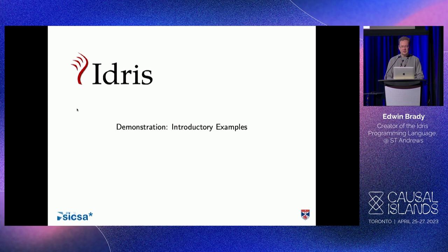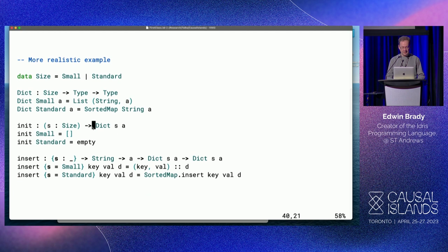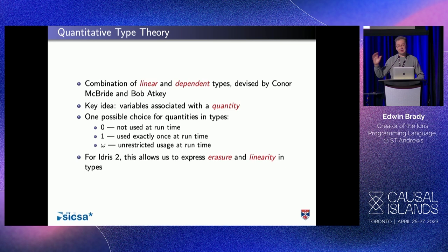I'll take questions any time. There's a question about what's going on with the braces in the insert line. That's a really important question - it's so important that I even planned to talk about it. I'm going to defer that because we need to know about quantities to know what's going on with the braces. I'll tell you what quantitative type theory is - it's a lovely little calculus. We're combining linear and dependent types. Dependent types you've just seen. This is first-class types where values can tell you something about types.